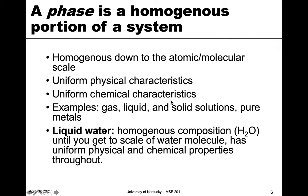Examples of this would be a gas that has uniform physical and chemical characteristics — homogeneous until you get down to the atomic/molecular level. For example, a hydrocarbon gas would have hydrogen and carbon at that scale, but overall up until that point the characteristics are uniform. Liquids, solid solutions, and pure metals are all examples of a phase — they meet this criteria of being homogeneous down to the atomic/molecular scale with uniform physical and chemical characteristics.